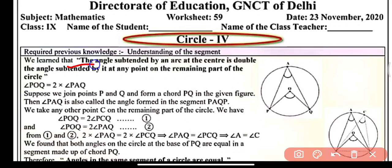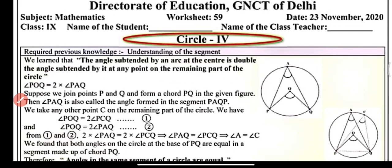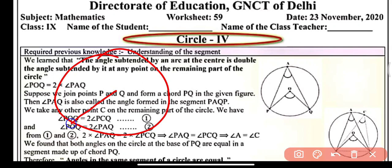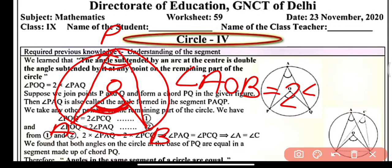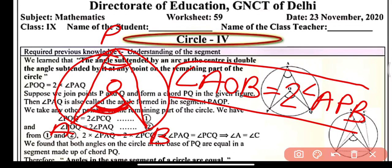Now we have already learned that the angle subtended by an arc at the center is double the angle subtended by it at any point on the remaining part of the circle. So the key concept from our previous video: if AB is an arc and O is the center, then angle AOB will be double of any angle formed at any other point P on the circle. So angle AOB will be equal to twice of angle APB.